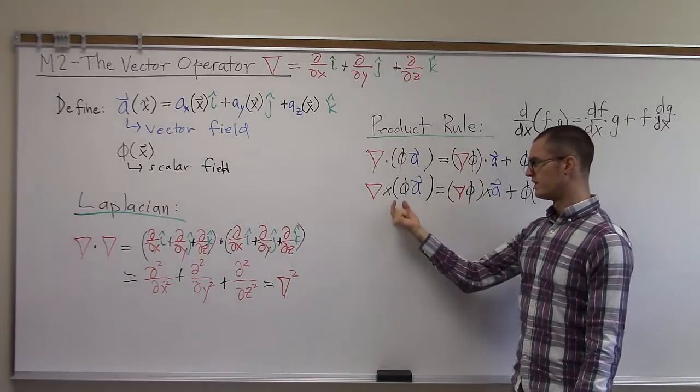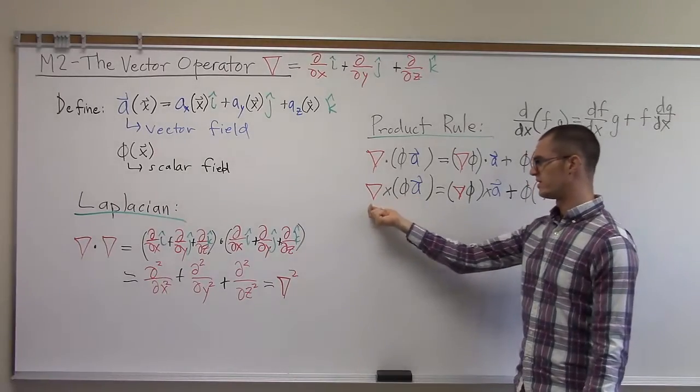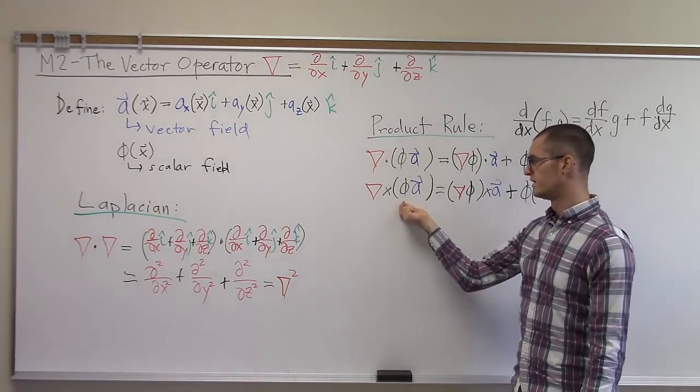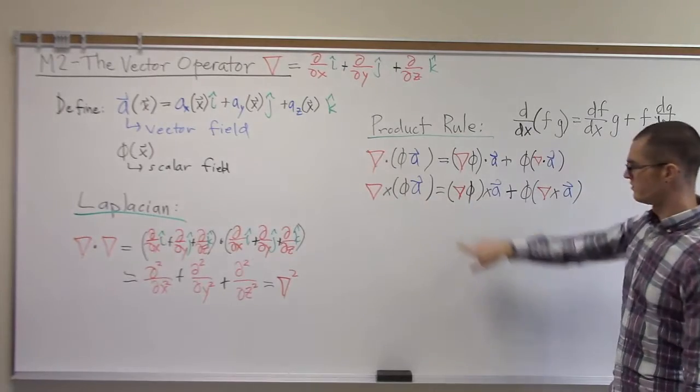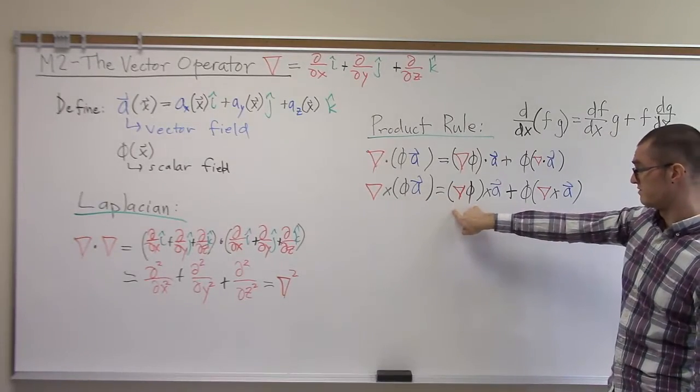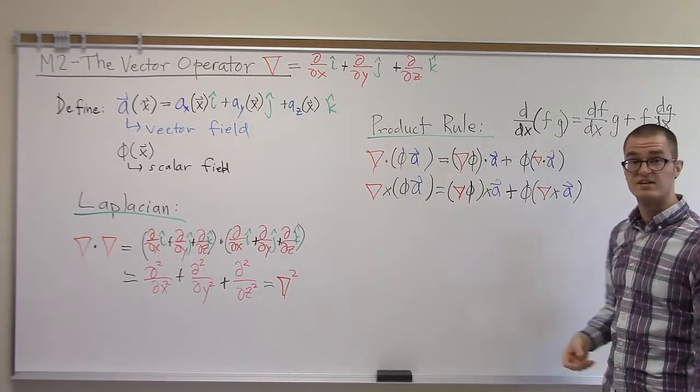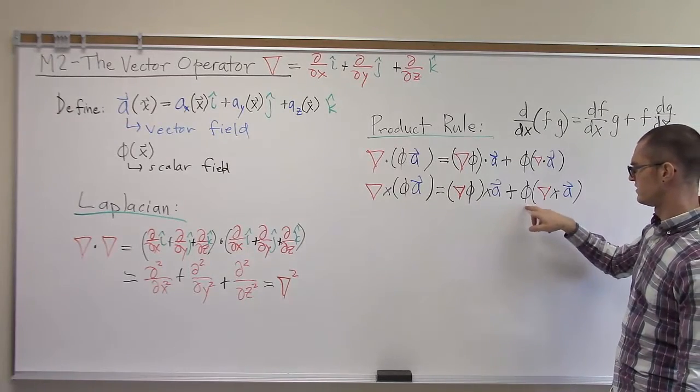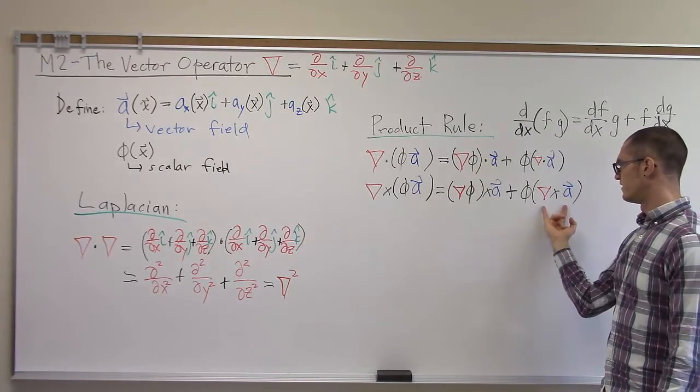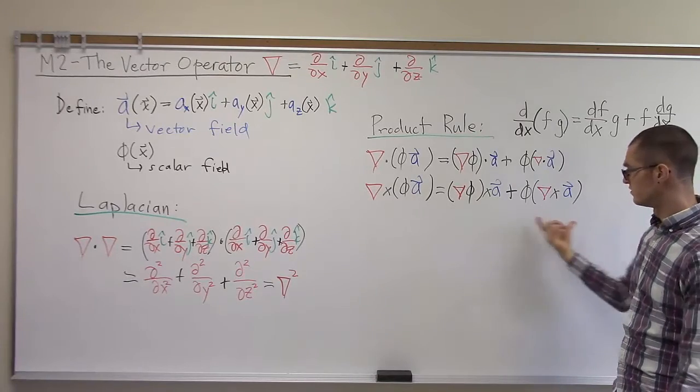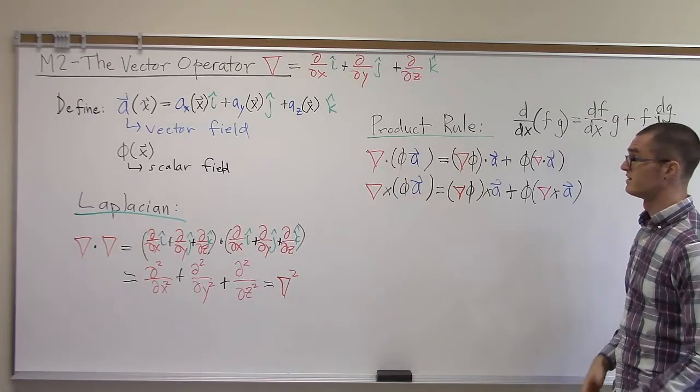This is the cross product between a vector and a vector, so that should give us vector results. Here we've got a vector, gradient of phi, crossed with a. That gives us another vector. And then we have phi, which is a scalar field, multiplied by the curl, which is a vector field. So in total that is also a vector field.